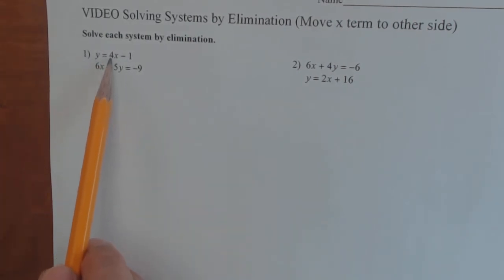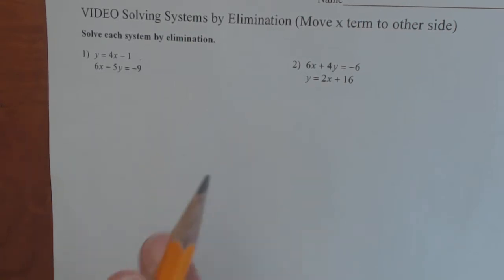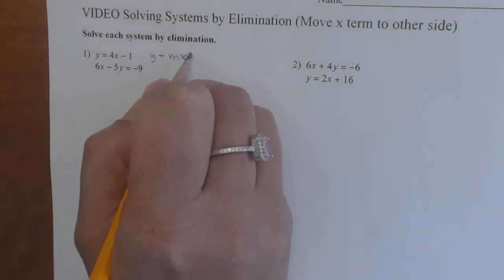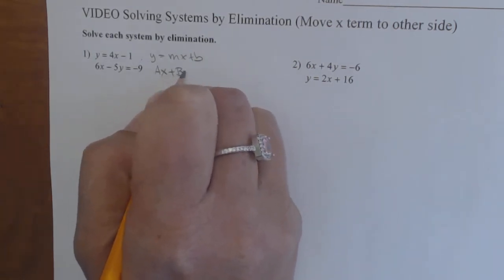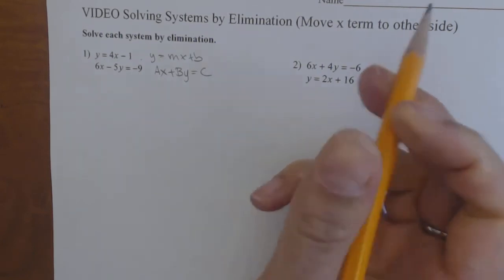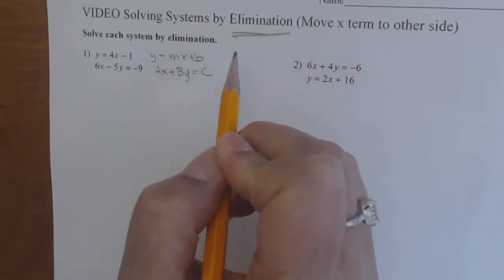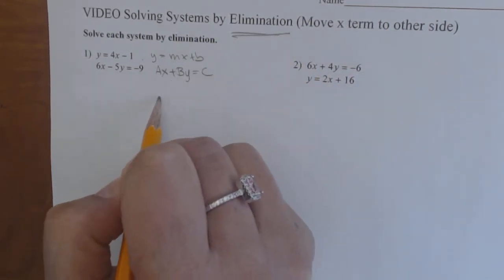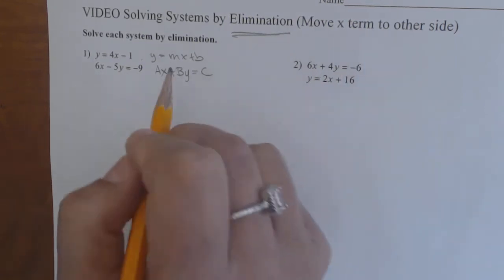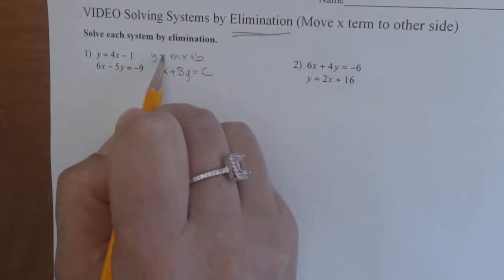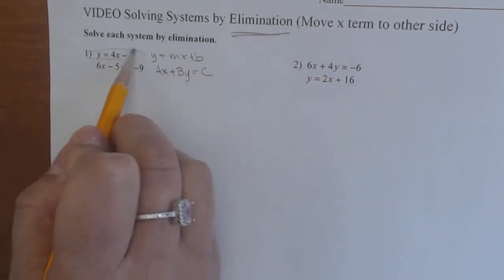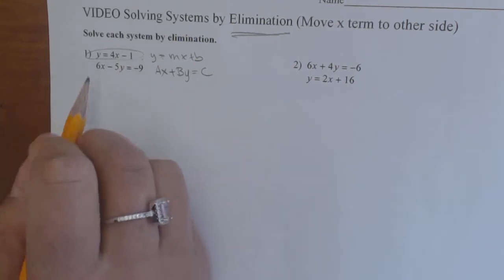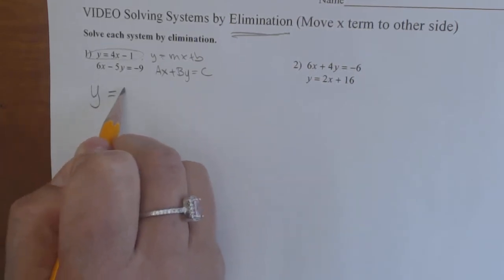Let's look at number one: y equals 4x minus 1, and 6x minus 5y equals negative 9. This first equation is in slope-intercept form, y equals mx plus b. The second is in standard form, ax plus by equals c. In order to use elimination, we need our x variables and y variables to line up — and they don't here. So we're going to have to take the first equation and move the x variable.